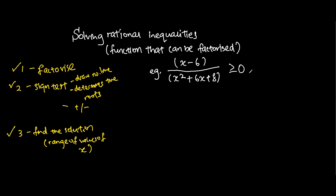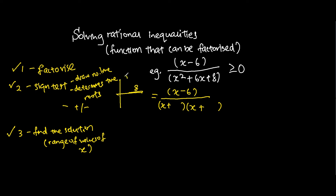The first step is to factorize. We factorize the denominator because it can be factorized. So x squared plus 6x plus 8 — we know this can be split into x and x. Looking at the factors, we use 2 and 4. When we crisscross, it gives us 6x, so the factorized form is x plus 2 and x plus 4, giving us x minus 6 over (x+2)(x+4) greater or equal to 0.